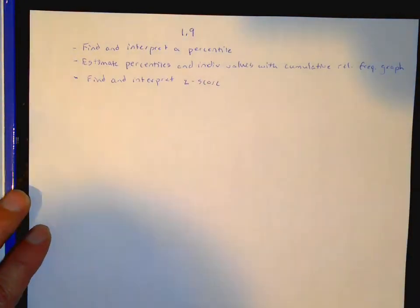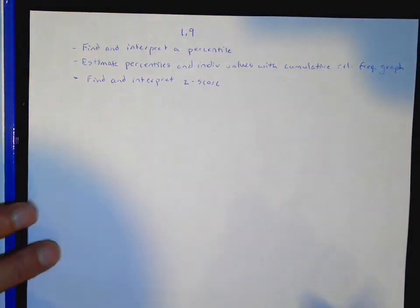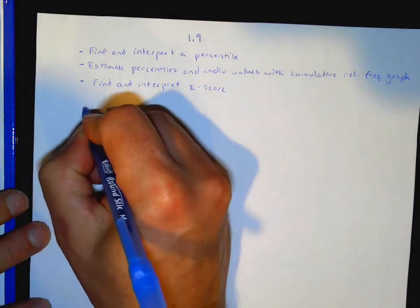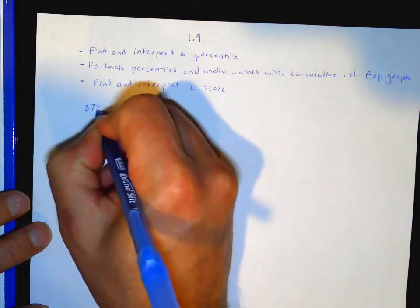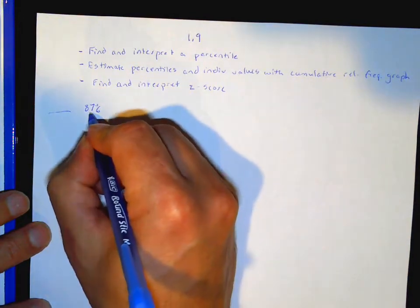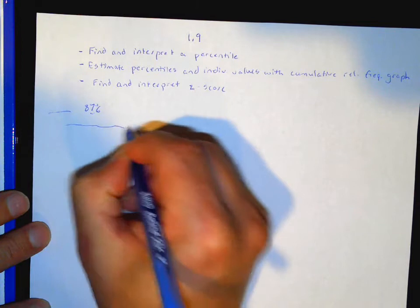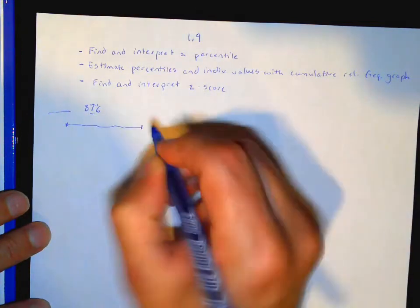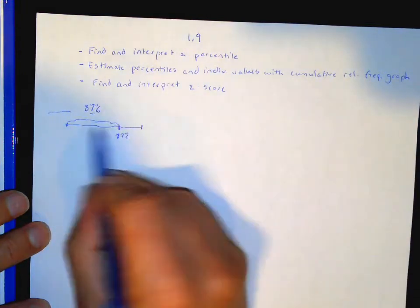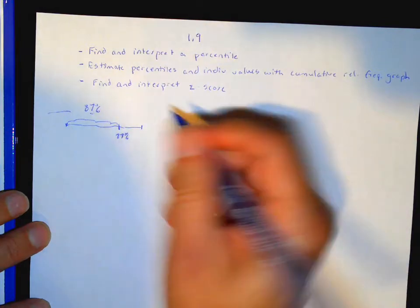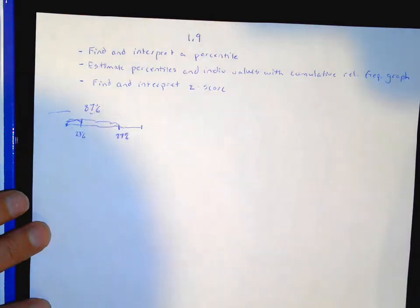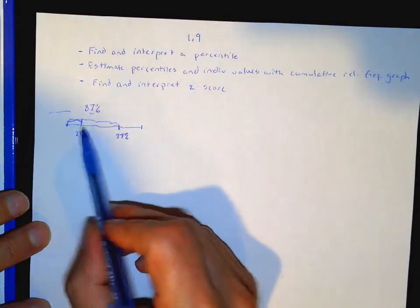This might be a little new to you. So first of all, a percentile. When you guys take any standardized tests, say you take the SAT or the PSAT or something, you get something back that says you're in the 87th percentile. It gives you a score and tells you that score is in the 87th percentile. That means that you did better than 87% of the people. If this is the worst and this is the best, you are at the 87th percent. There were 87% below you in your score.